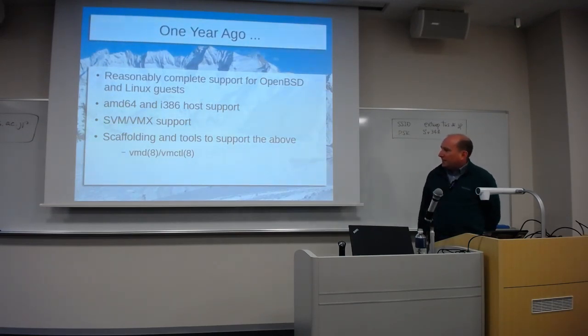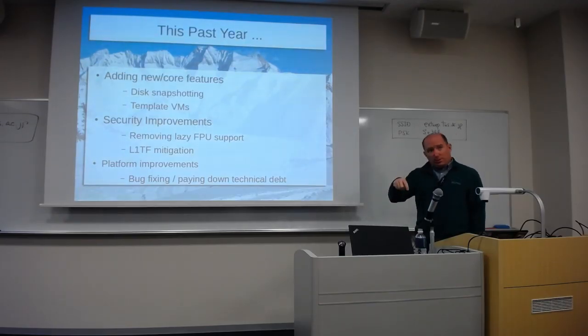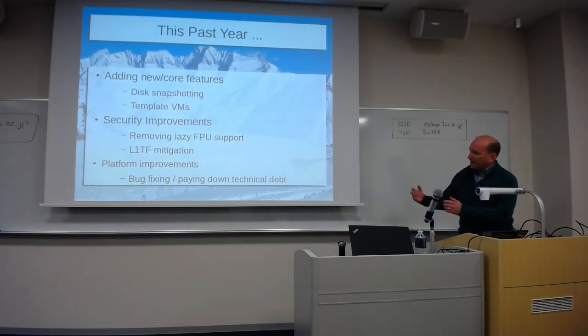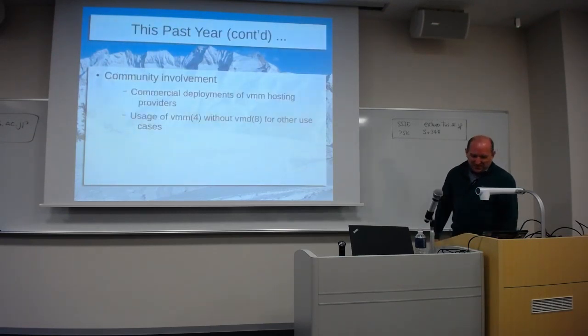So all that stuff was already in there last year. What did we do this year? New core features we added: some new platform enhancements, some security improvements, and other things I'll talk about in more detail. Disk snapshotting and QCOW2 support for the disks in VMD. Template VMs — a simple way of inheriting VM settings from a parent to a child. Security improvements, a bunch of stuff we'll talk about. Platform improvements, paying down technical debt and bug fixing. We actually were able to cut the number of bugs down last year, which I thought was pretty good.